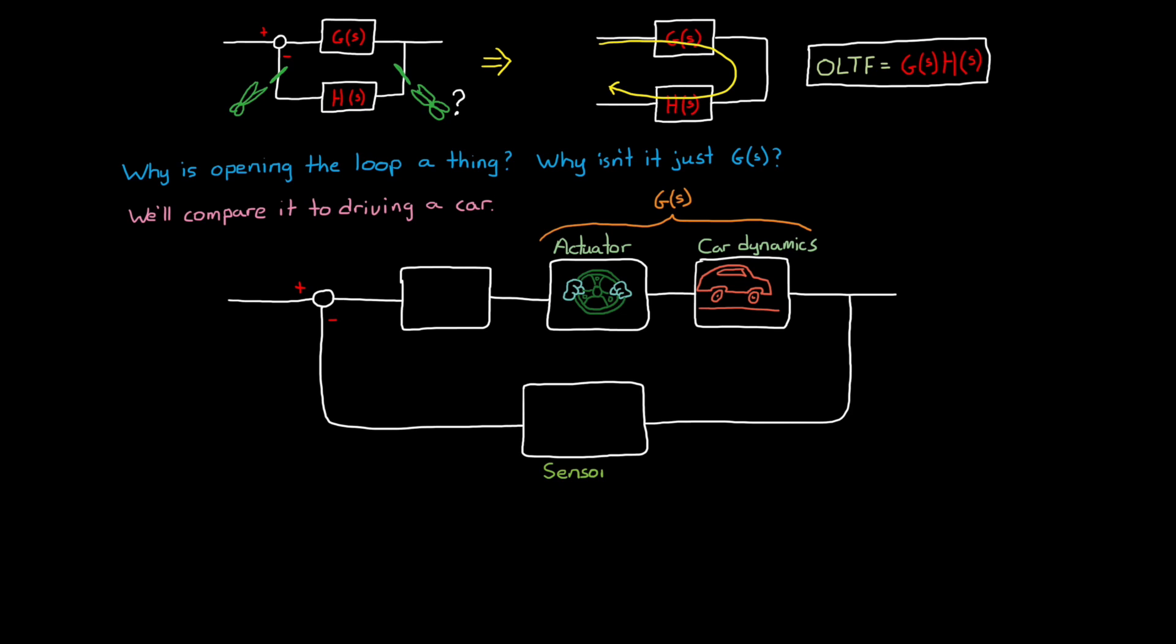In the feedback path, we have our sensors. In this case, as the driver, they are your sensors. It is the way that you recognize what the car is doing. Now this is mostly your eyes, but it's also things like the g-force on your body when you turn and accelerate. You use all of that to understand how the car is moving. Closing the loop is your brain, the controller. It is taking the input to the system, which is how you want to drive. It's recognizing what you're doing based on your sensors, and then it adjusts accordingly with your arms and legs.